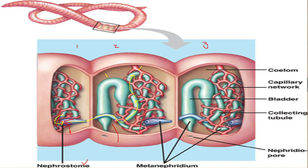From the collecting duct, the metabolic waste enters a portion called the bladder. The bladder helps in the storage of excretory substances for some time. After storage, the bladder empties through an opening called the nephridium pore. Through this small opening, urine or simply the excess water moves out from the body of the earthworm.